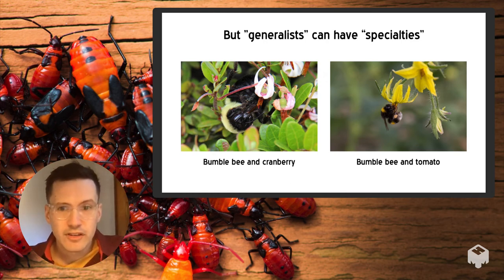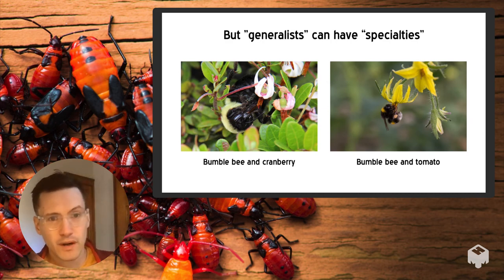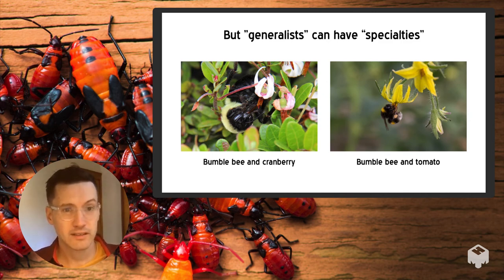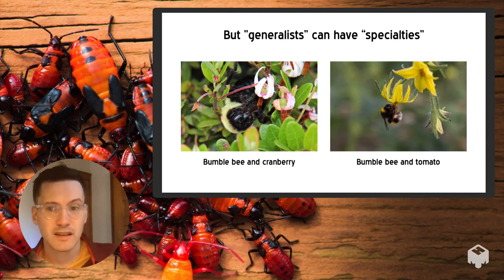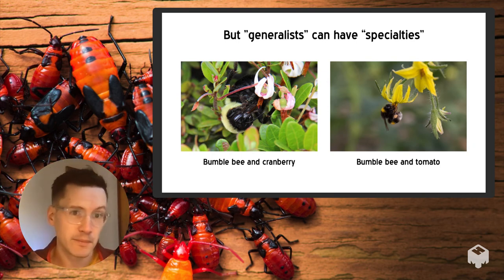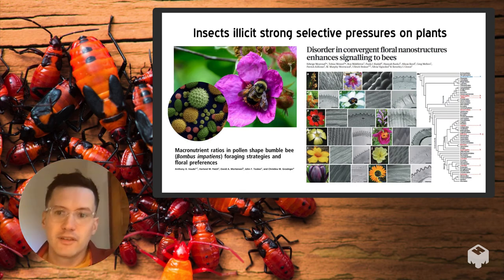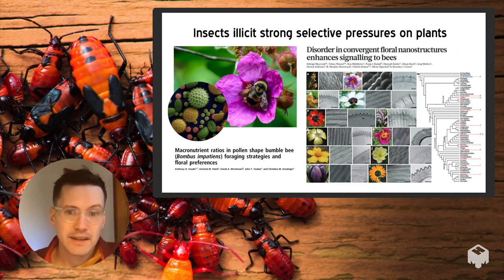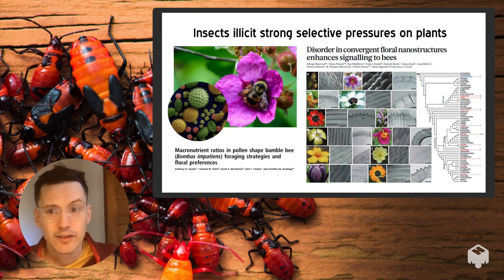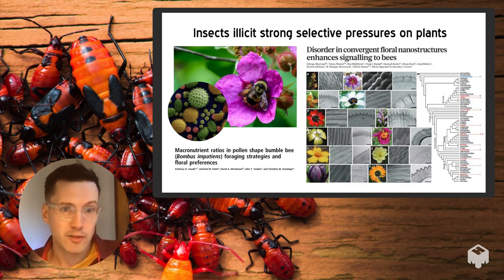Despite a tendency toward generalization, insects co-evolving with specific assemblages of plants do retain some specialist tendencies. Bumblebees are a great example — while highly generalist, they are particularly adept at extracting pollen from cranberry and tomato flowers, thanks to a physiological adaptation called sonication or buzz pollination. We'll talk more about these specific adaptations across pollinator communities in the next video.